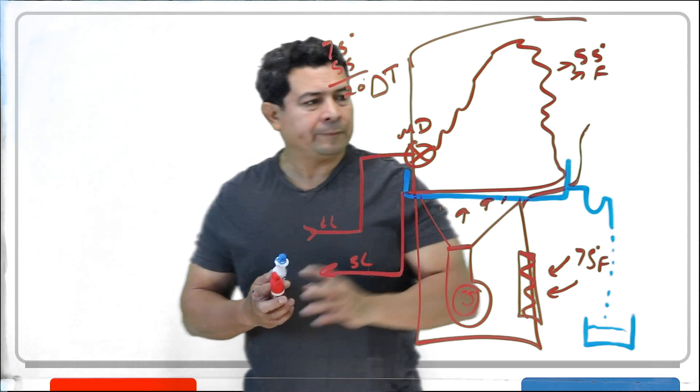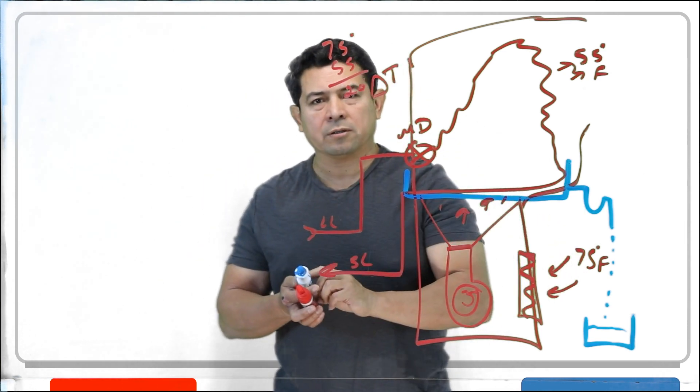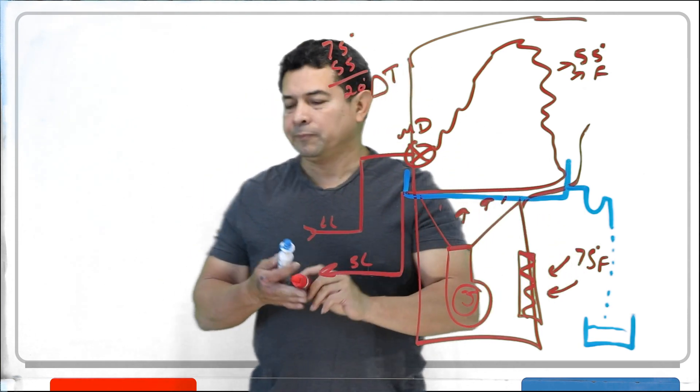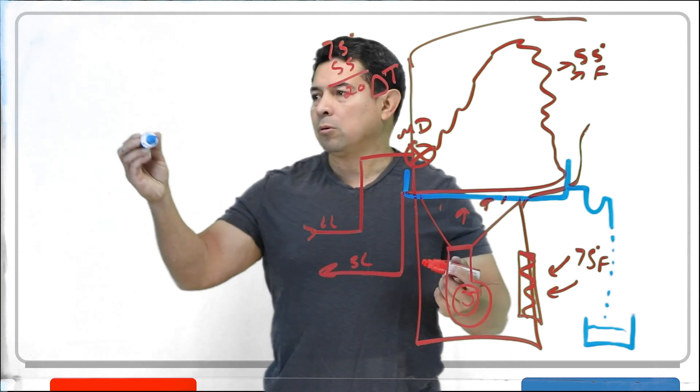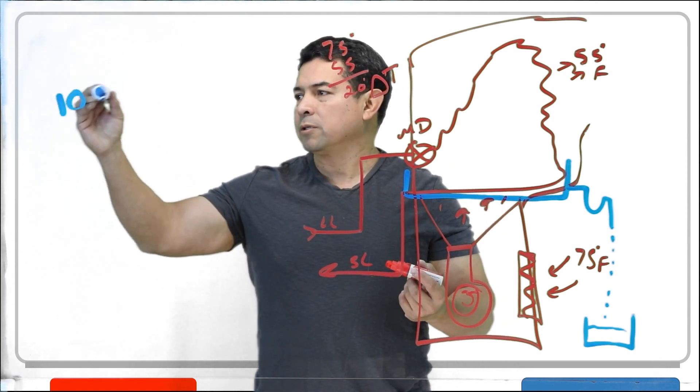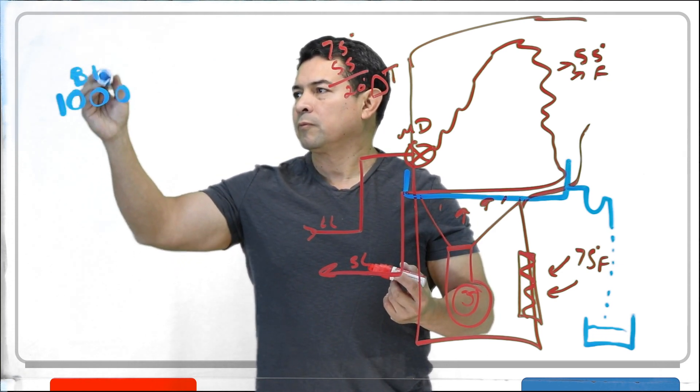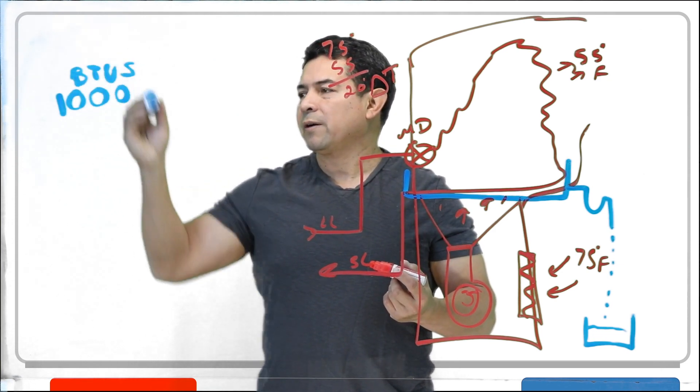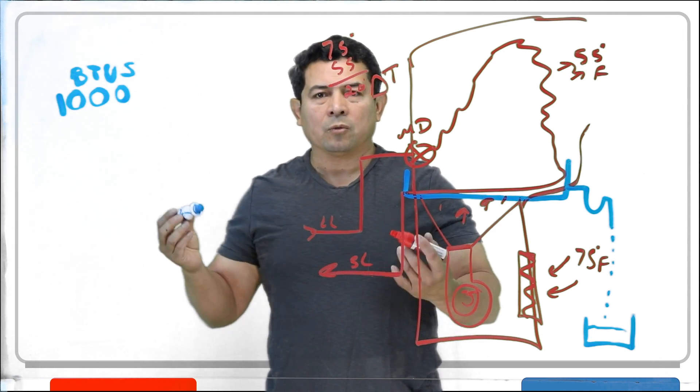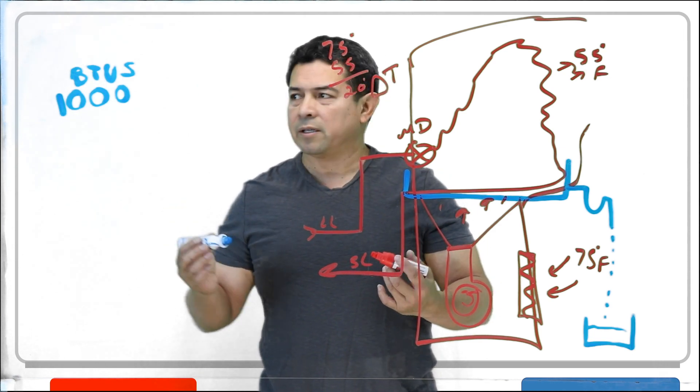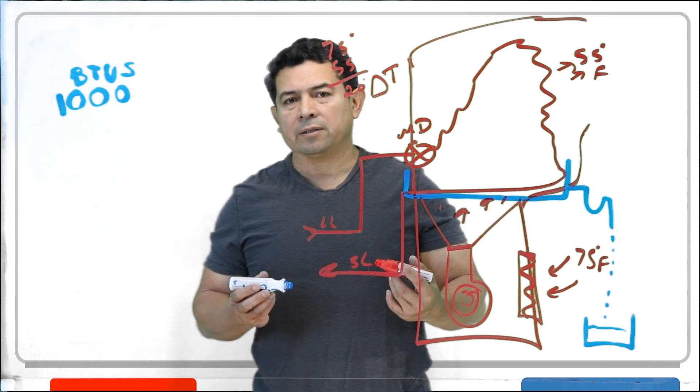If we think about it, let's say, and I'm just going to use this just as an example, but let's say that this coil is supposed to absorb 1,000 BTUs. Now, if it's absorbing 1,000 BTUs, that's the measurement of heat. Is it 1,000 sensible or is it 1,000 latent heat?